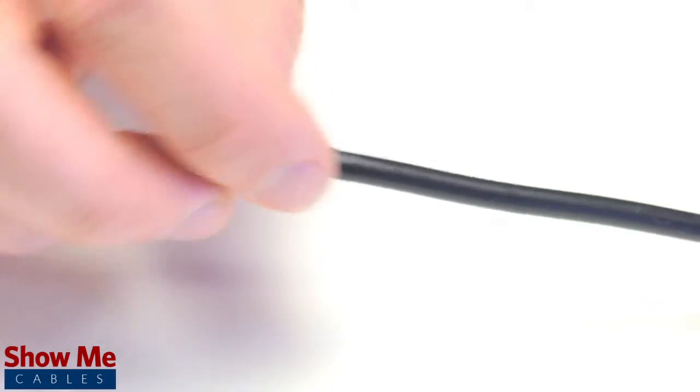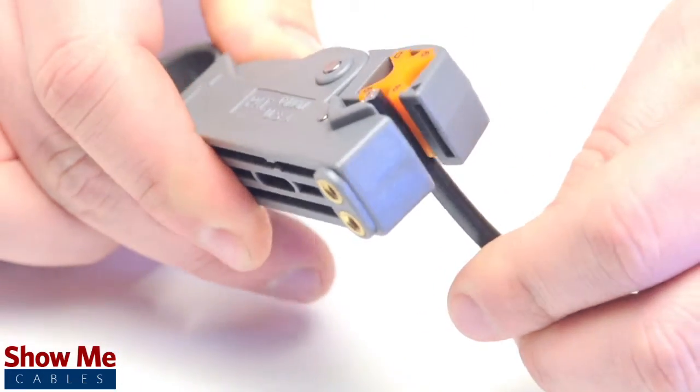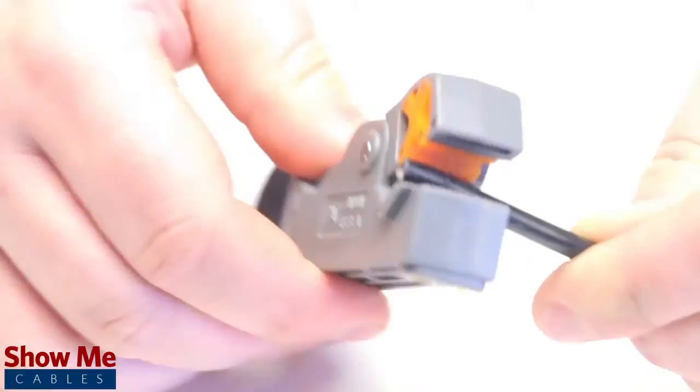Start by inserting the ferrule over the outer jacket of the cable. Then using your cable stripper, strip back the outer jacket and dielectric.